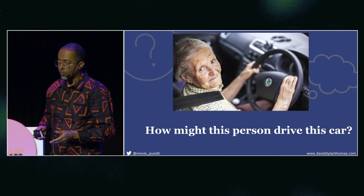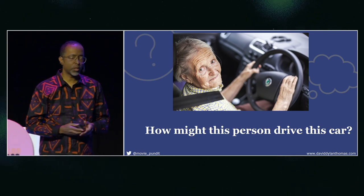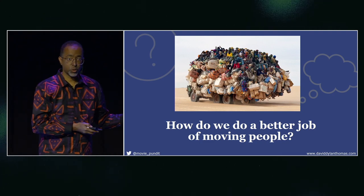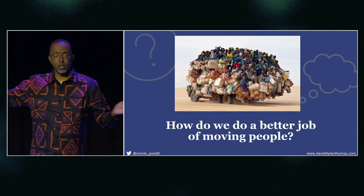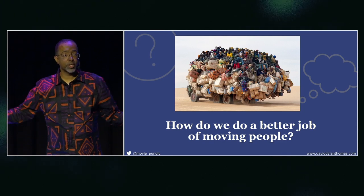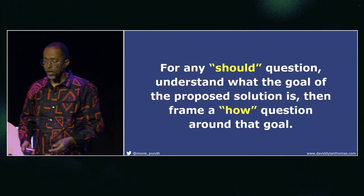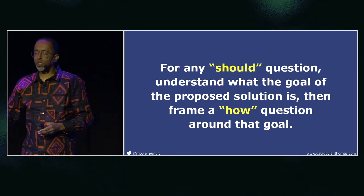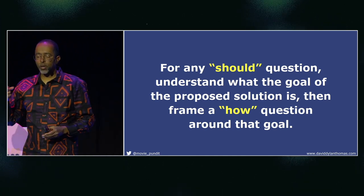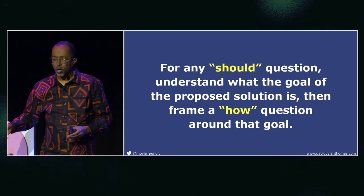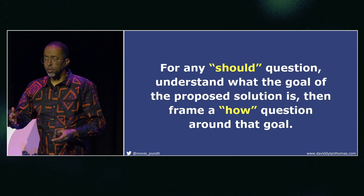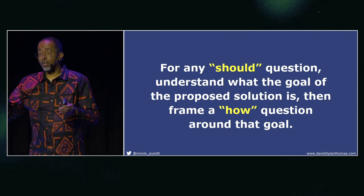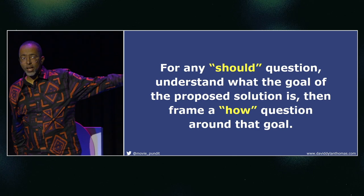Let's go back to our initial question: 'How might this person drive this car?' It's good enough, but what if I asked, 'How do we do a better job of moving people around?' — because that's why she was in the car in the first place. If I frame it this way, things like public transportation are on the table. For any 'should' question, try to understand what the goal of the proposed solution is, then frame a 'how' question around that goal. With 'should this person drive this car,' the goal is presumably safer driving — so answer that: 'How do we get safer transportation?' And you'll notice: if you answer that 'how' question, you get the answer to the 'should' question for free.